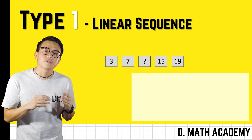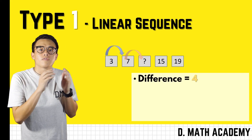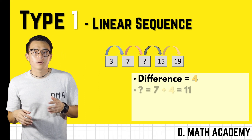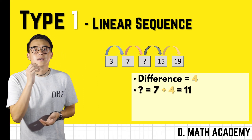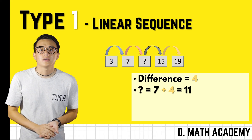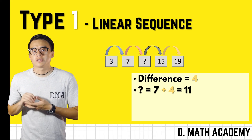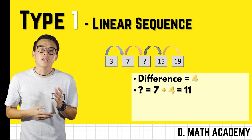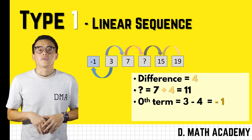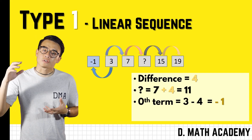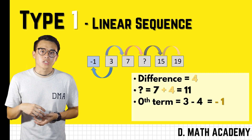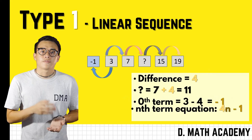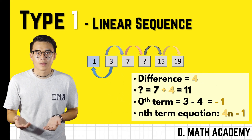Moving on to example two: we have 3, 7, unknown, 15, and 19. The term-by-term difference is four, so simply add four to seven and you get the unknown as 11. To get the zero term, take 3 minus 4, which gives you negative one.